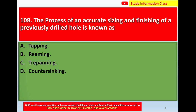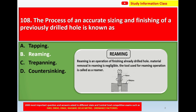Question number 108: The process of accurate sizing and finishing of a previously drilled hole is known as — option A: tapping, option B: reaming, option C: repainting, option D: counter-sinking. Correct answer is option B — reaming. Reaming is an operation of finishing an already drilled hole; material removal in reaming is negligible. The tool used for a reaming operation is called a reamer.